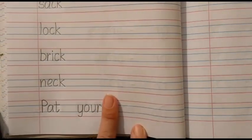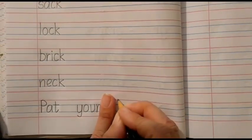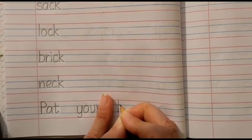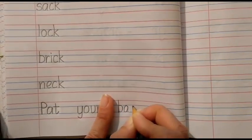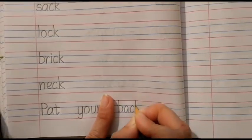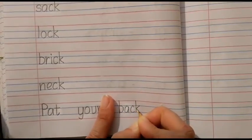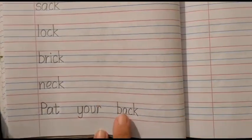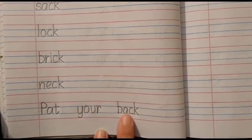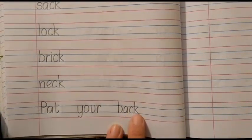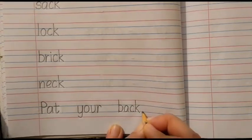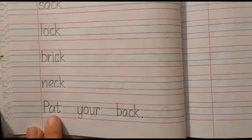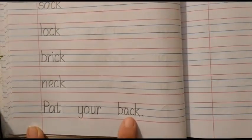We will write a sentence. The word is back. And after that, we end the sentence with a full stop. That full stop will come on the second blue line. So let us read the sentence. Pat your back.